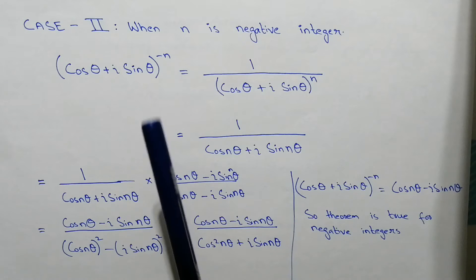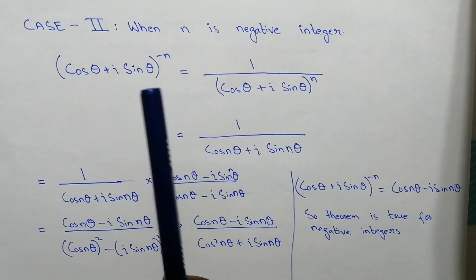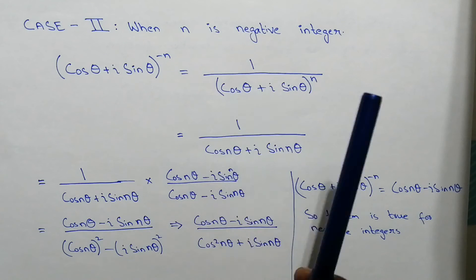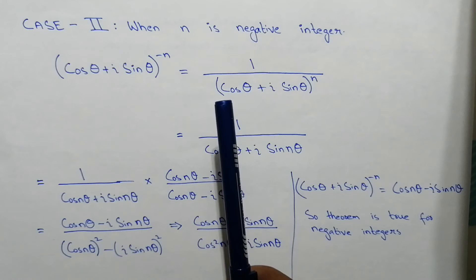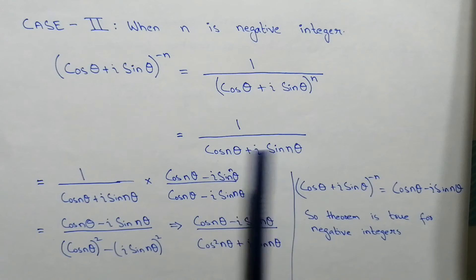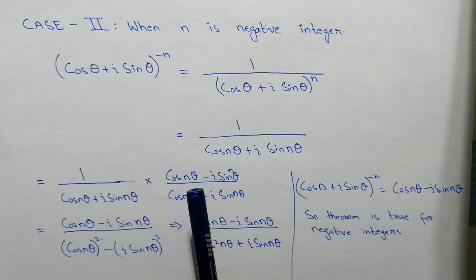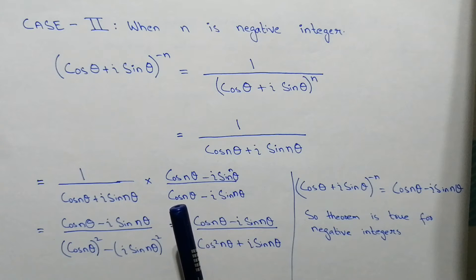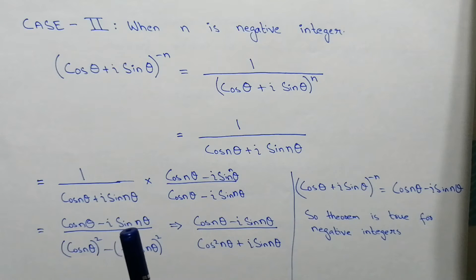Now here we have Case 2: when n is a negative integer. So (cos θ + i sin θ)^(−n) can be rewritten as 1 / (cos θ + i sin θ)^n. Applying the same technique and bringing n inside gives 1 / (cos nθ + i sin nθ). We can rationalize this by multiplying numerator and denominator by (cos nθ − i sin nθ).